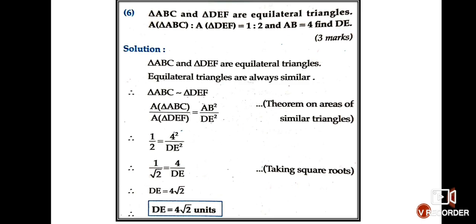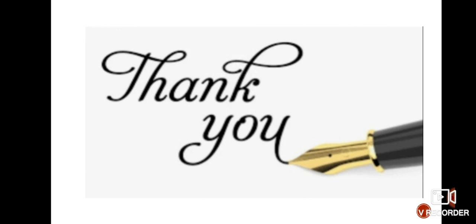We are now finished with the chapter. This chapter has four exercises and we have completed all four. We have done all the theorems — especially the BPT and the angle bisector property are very important. Please learn the theorems by heart, try to solve all the sums in your notebook, go through the problem set, and wherever you have any doubt regarding any sum, please mark it. We will discuss it when school begins. Thank you girls, good day and have a great day.